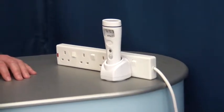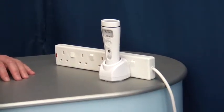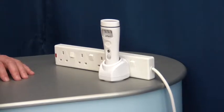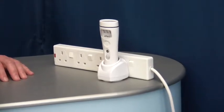In the event of a power cut, the torch automatically turns on, allowing you to safely navigate your way to the torch, even in complete darkness.